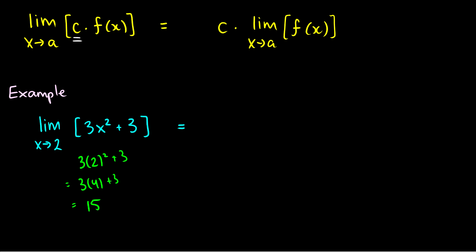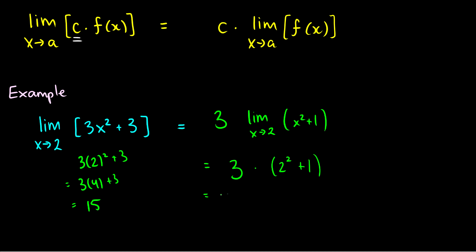Another way we can do it is to pull out the constant factor of three. So this would be three times the limit as x goes to two of x squared plus one. This equals three times, well, plugging in two gives two squared plus one, which is three times five, so three times five is just fifteen. We can see that these values are the same. Sometimes it's easier to pull out a constant factor because it makes multiplying all those other numbers much easier than including them in every term. That's the multiplication law for limits.